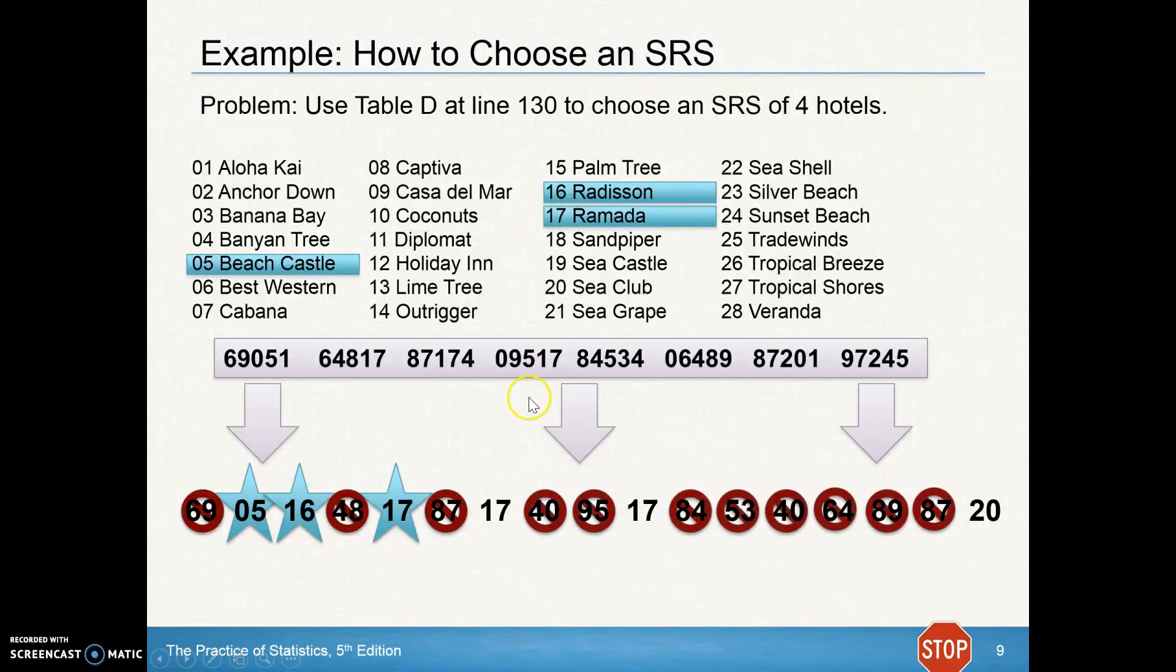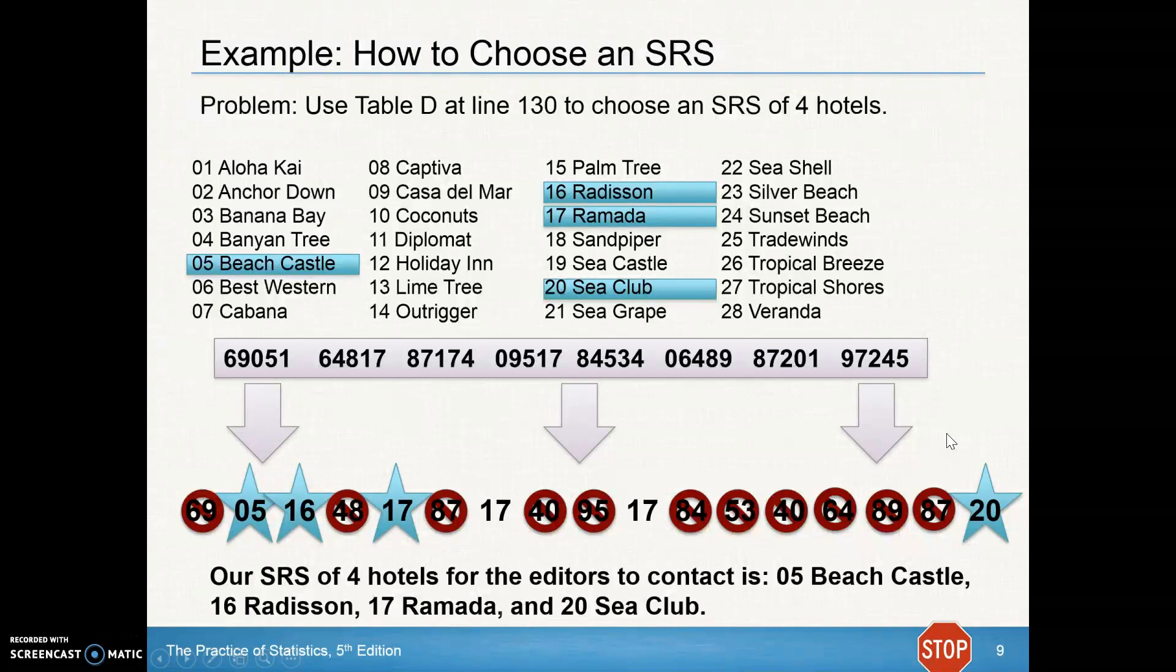87's not in the group. And then 17 is just a repeat. 40, 95 are not in the group. 17's a repeat. These are not between 1 and 28. And then there is our last one at 20. So our SRS of four hotels for the editors to contact is the Beach Castle, Radisson, Ramada, and the Sea Club.